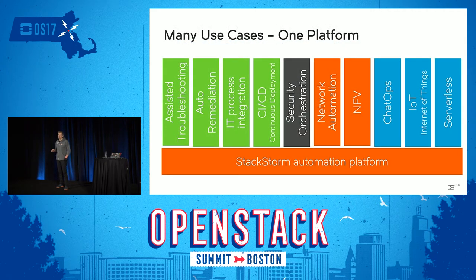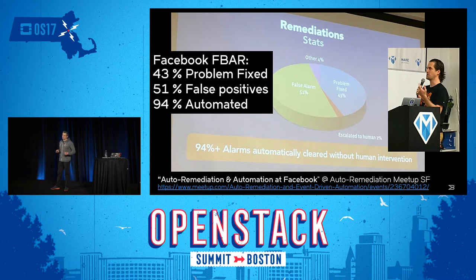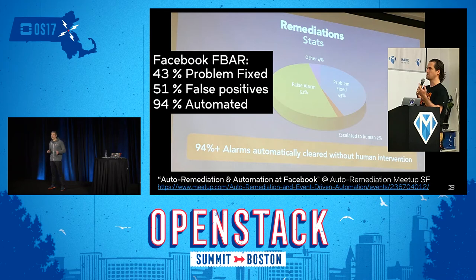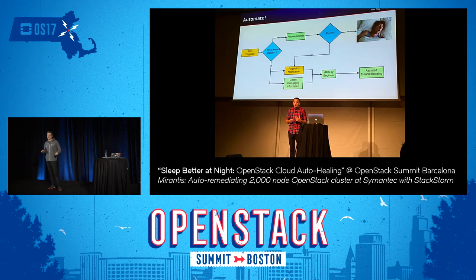What has been automated with StackStorm? A lot of things. The StackStorm team supports OpenStack and promotes use cases like auto-remediation and network automation. Auto-remediation is probably the biggest use case. Facebook's FBAR is the most notorious example — they auto-remediate 94% of incidents. For the record, they are not using StackStorm, but we are friends and inspire each other's architecture. StackStorm has also been used for auto-remediating OpenStack installations — last year in Barcelona, Mirantis presented using StackStorm to auto-remediate their cloud.